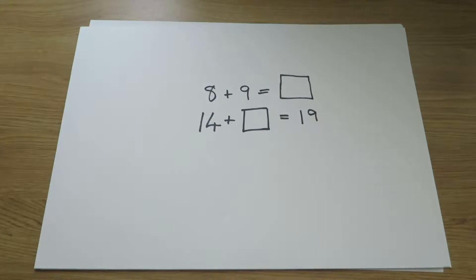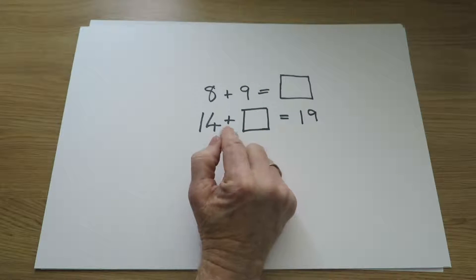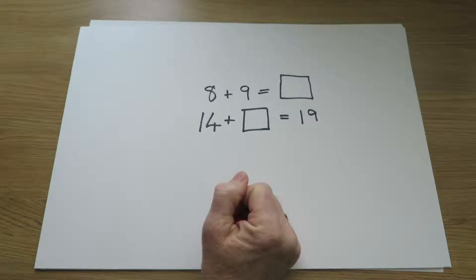At this stage the children are still learning addition and subtraction facts to 20 fluently. They need to be able to answer quickly questions such as 8 add 9 equals what, or 14 add what equals 19.